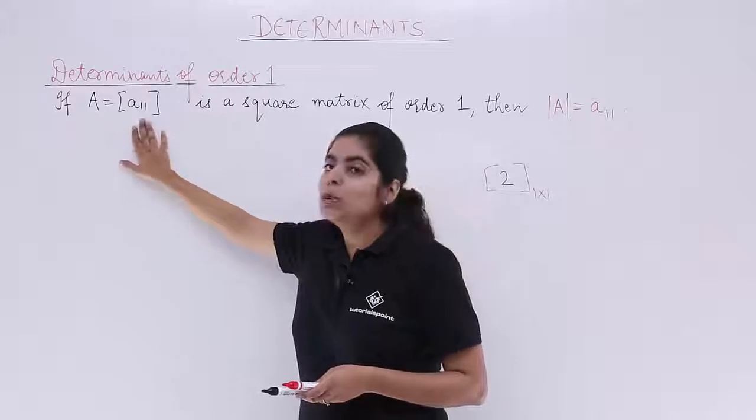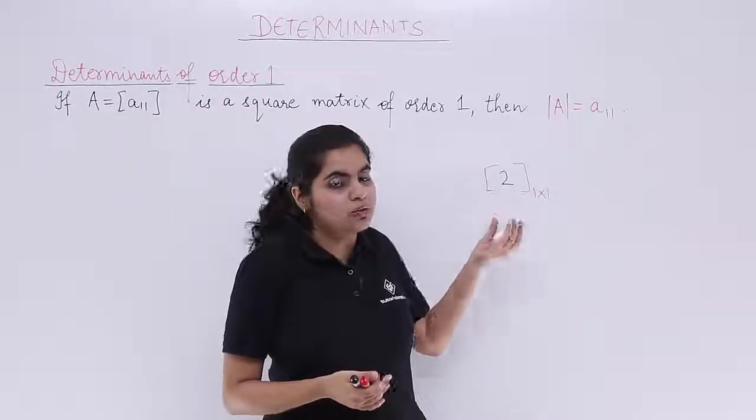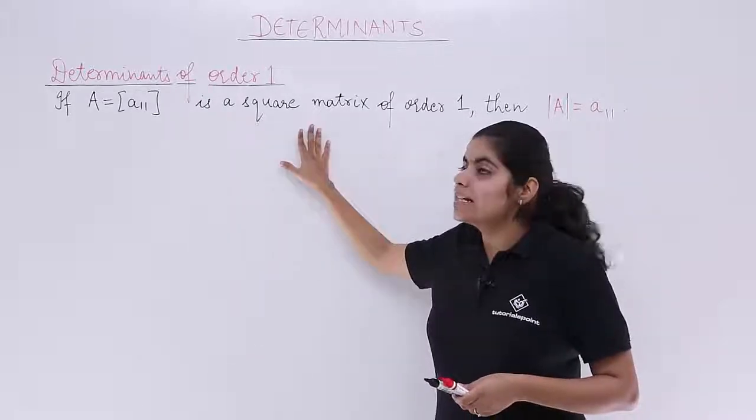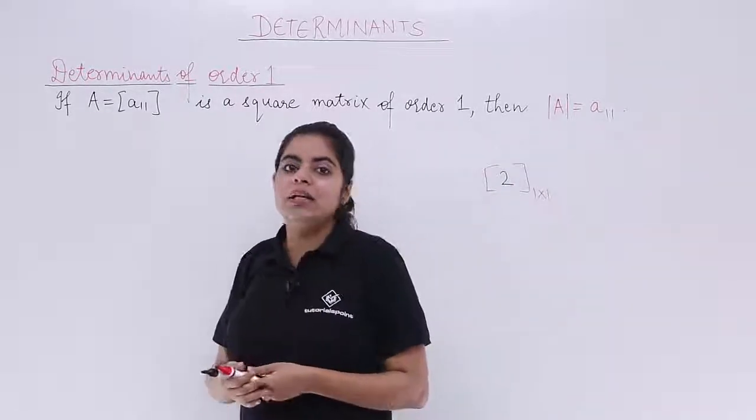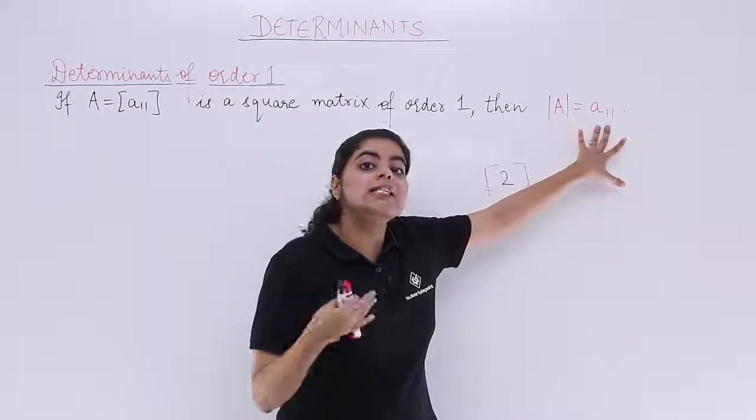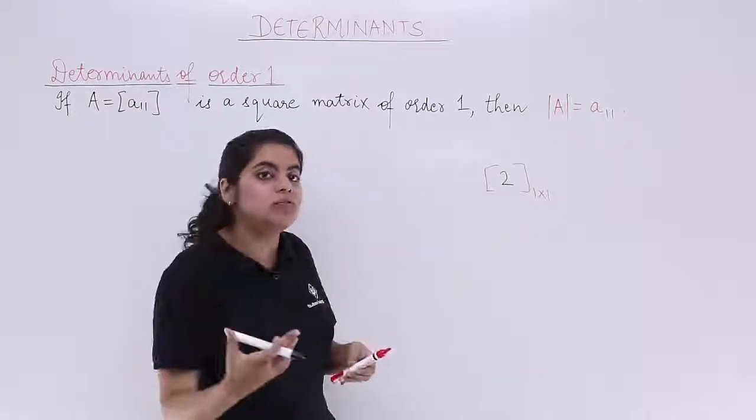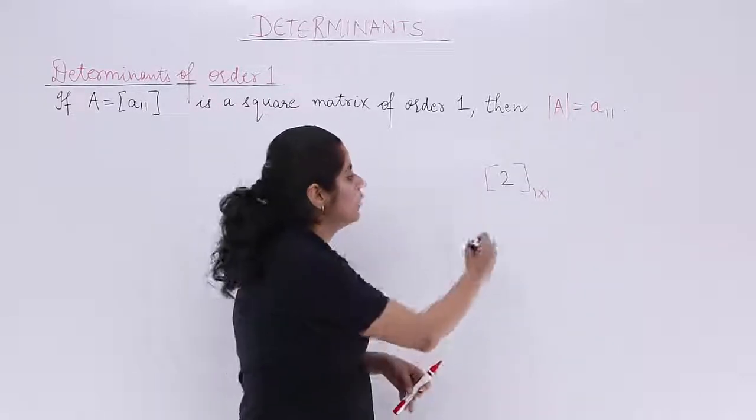That means if A = [a11], that means if A is equal to say 2, 3, or 4 is given to me, then that square matrix has the determinant value as |A| = a11 itself. So what is the determinant value of this matrix? It is definitely equal to a11 only.